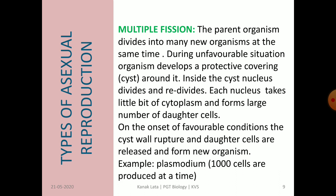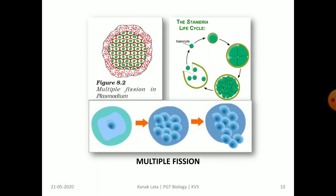Plasmodium produces thousands of cells at a time. The given figure shows multiple fission in plasmodium. You can see the cyst wall, and inside the cyst wall the nucleus divides and re-divides to form a large number of nuclei.